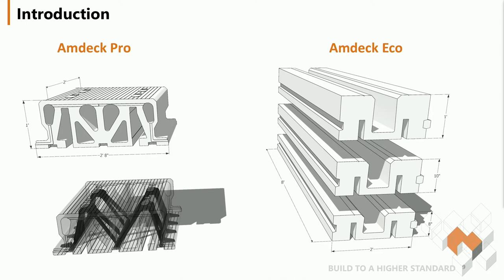AMDEC comes in two versions: the Pro version and the Eco version. The Pro version comes in a single configuration while Eco comes in several thicknesses — 8 inch, 10 inch, and 12 inch. AMDEC Eco comes in 8-foot lengths while the Pro version is modular with integrated plastic webs. Since AMDEC is essentially just a form for the concrete, the final result is similar regardless of which version you're using.